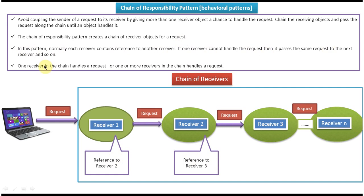If one receiver cannot handle the request, it passes the same request to the next receiver in the chain. That next receiver checks whether it can handle the request; if it can, it handles it, and if further passing is needed, it sends the request to the next receiver. There are two scenarios. The first scenario is: one receiver in the chain handles the request.